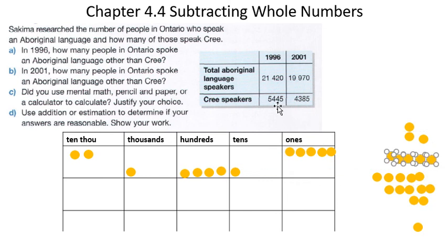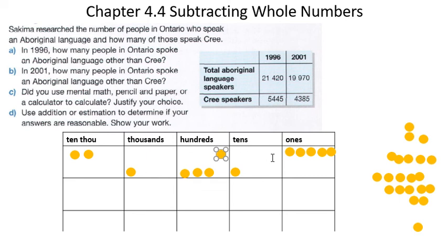Now it's saying take away four tens. I only have one ten here, so I'm going to regroup one of the hundreds — take one of the hundred chips, move it over here, and I'm going to make this an additional ten tens for a total of eleven tens. Let's do that now.